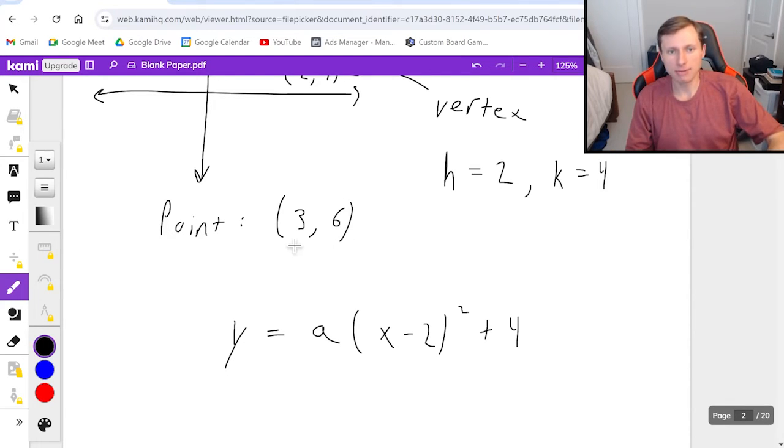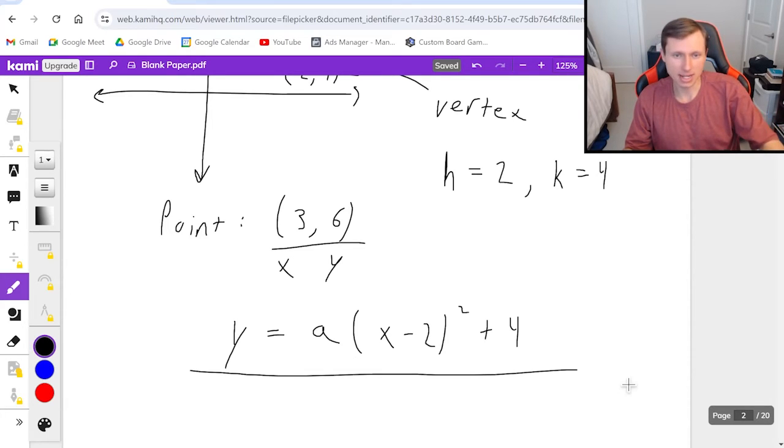To find a, we are going to have to use the extra point I gave you, specifically that 3 is the x value and 6 is the y value. And I'm just going to plug those into this function right here, 3 for x and 6 for y. And then I'm going to solve for a.